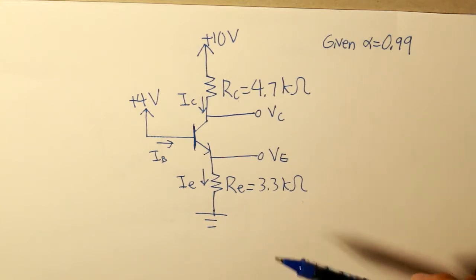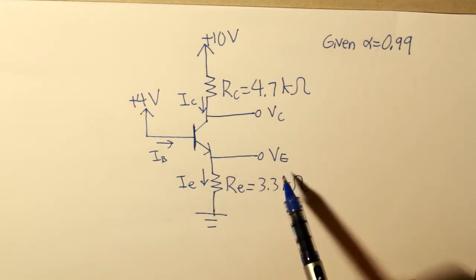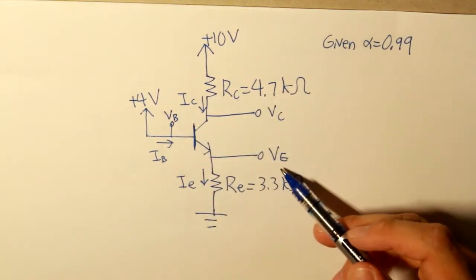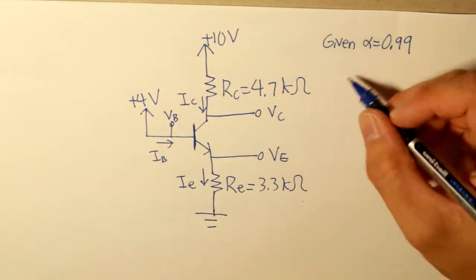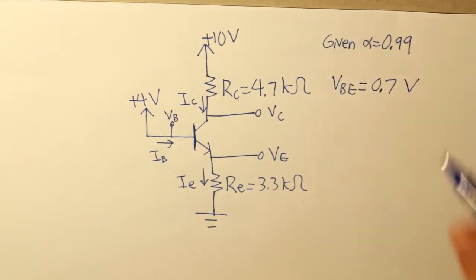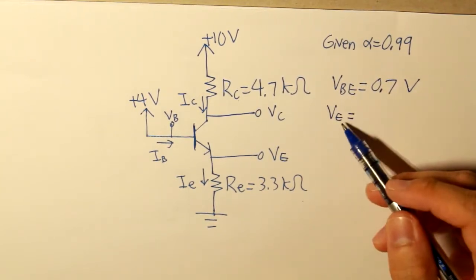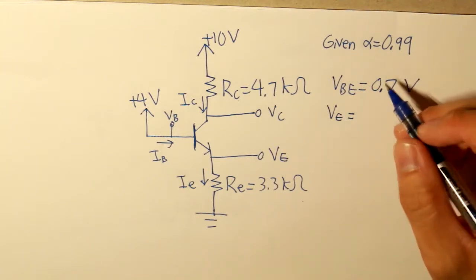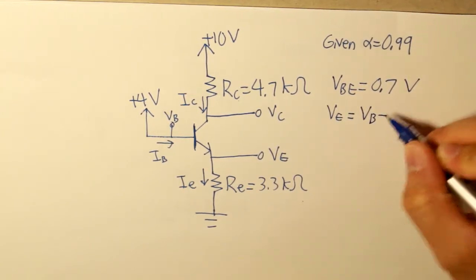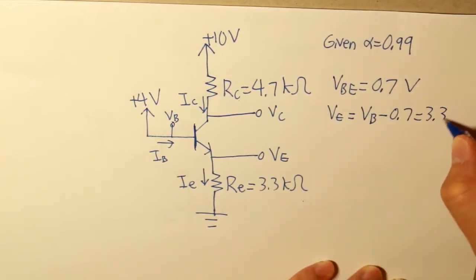First, let's assume that our voltage between the base and our emitter is equal to 0.7, the potential barrier. Since this is the case, then our emitter voltage will essentially be the base voltage subtracted by 0.7, and what we get is 3.3 volts.